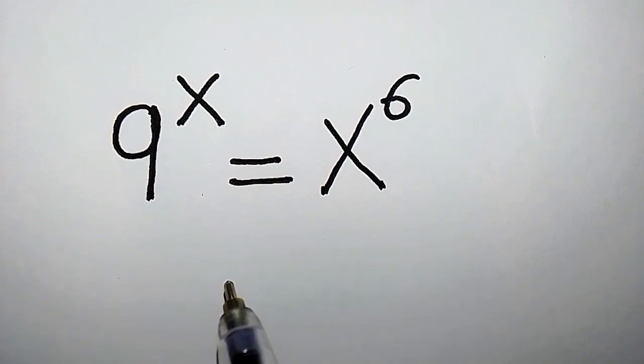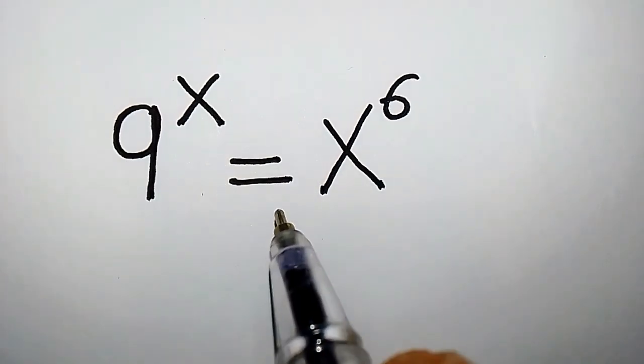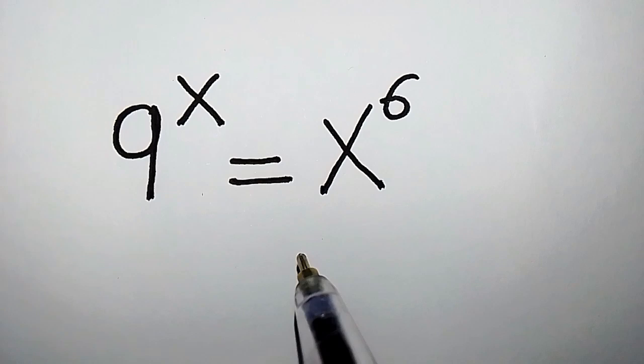This is fast and pretty easy to solve. 9 to the power of x equals x to the power of 6. How do we solve for x? Feel free to pause the video and try to solve before watching.